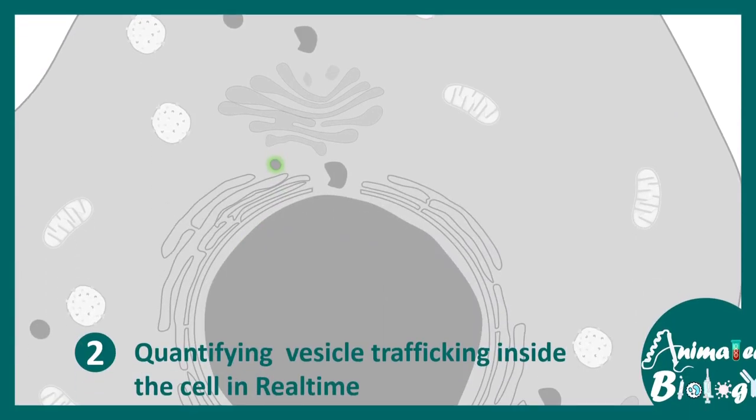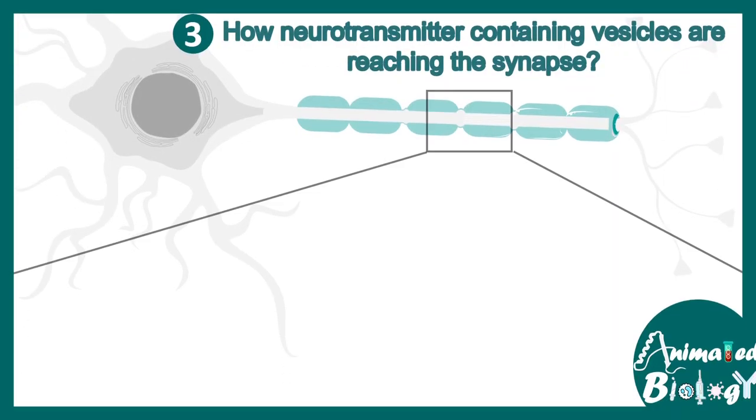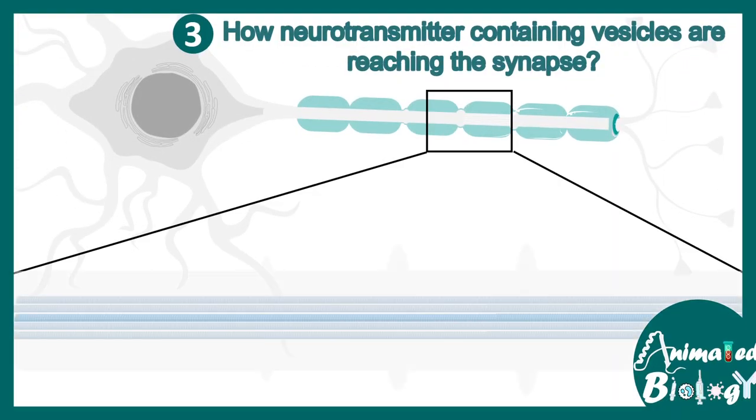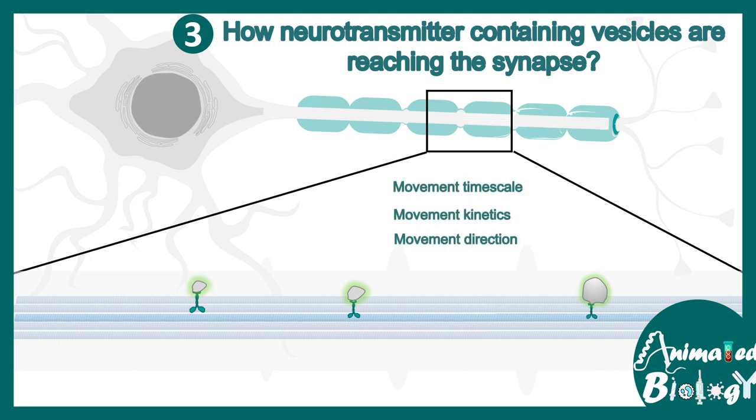Let's say we want to quantify vesicle trafficking inside the cell in real time, and this can be performed using FCS. Let's say we want to look at the neurotransmitter trafficking through the axon of a neuron, and these kind of molecular dynamics can be studied using fluorescence correlation spectroscopy. One can calculate the movement timescale, movement kinetics, direction of the movement, etc.